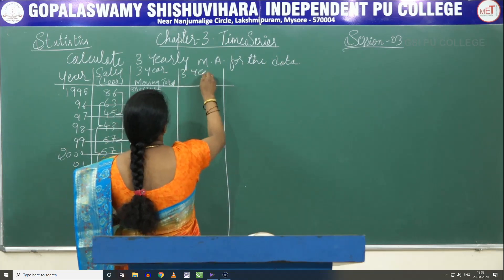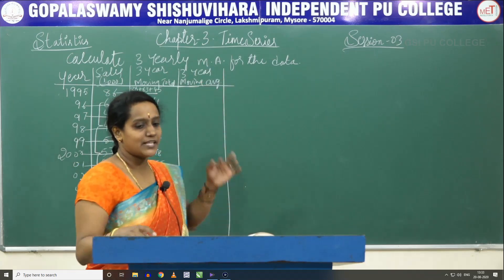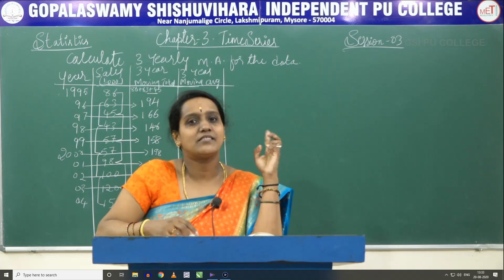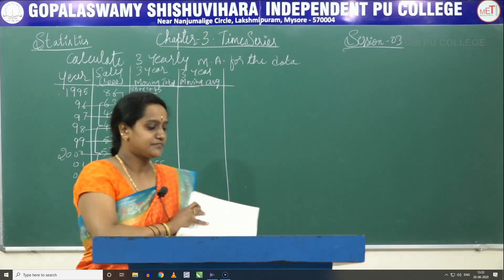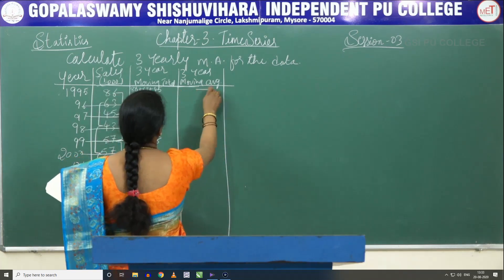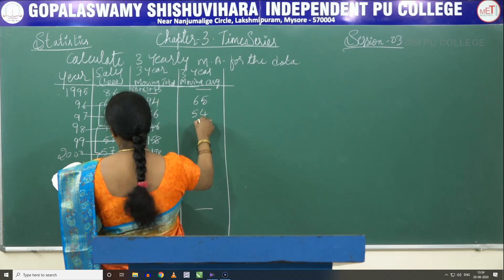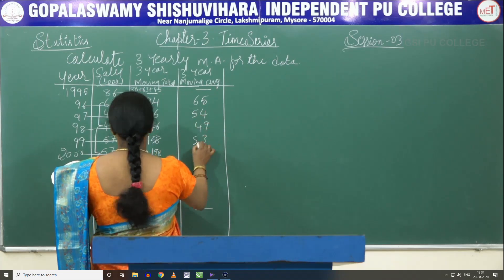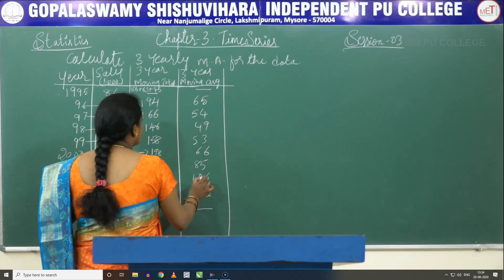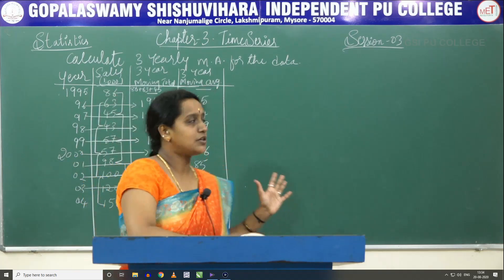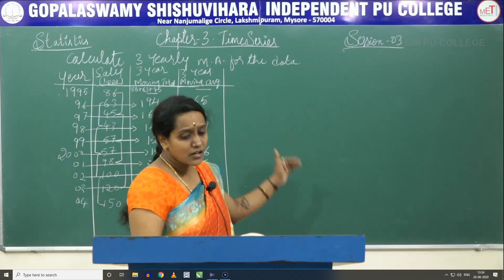The next column is the three-year moving average. Since we have added 3 years' sales, we should divide by 3. The first year and last year will be blank. The averages are: 65, 54, 49, 53, 66, 85, 106, and 122. These are the three-year moving average values.